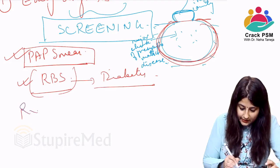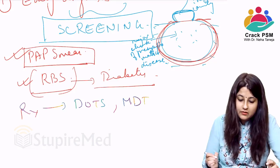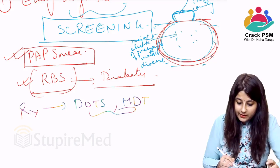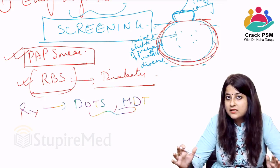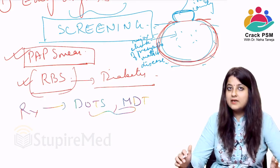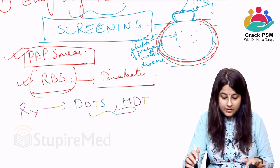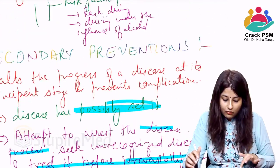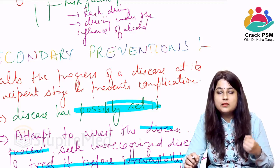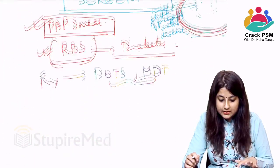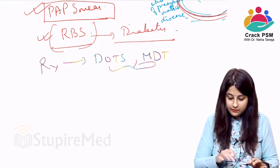Examples of treatment in secondary prevention include DOTS therapy for TB or multi-drug therapy for leprosy. If we start DOTS treatment for a pulmonary TB patient at the right time, we treat the person and prevent the disease from progressing to an irreversible stage.